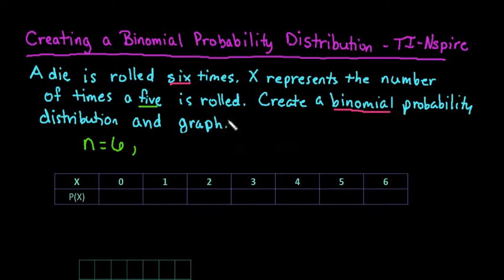The third thing is that the probability has to remain constant each time. And for a die, no matter how many times I roll it, the probability of rolling a 5 is always 1 out of 6. And the last thing is that X has to be able to represent the number of counts or the number of successes that you had out of the number of trials.